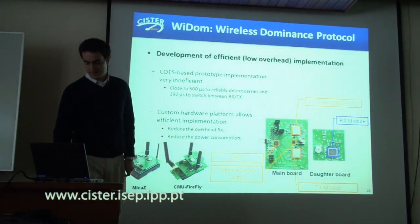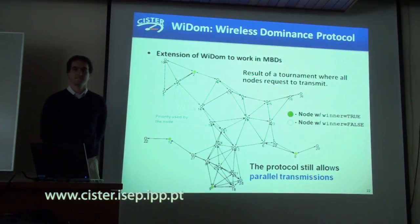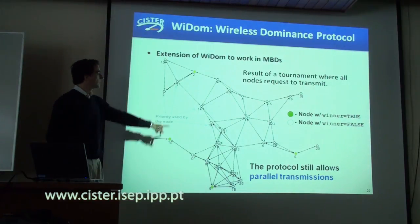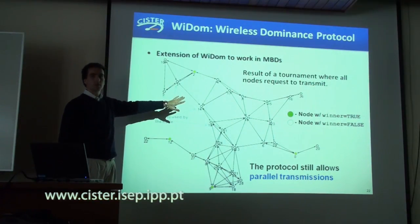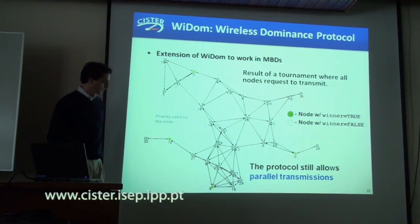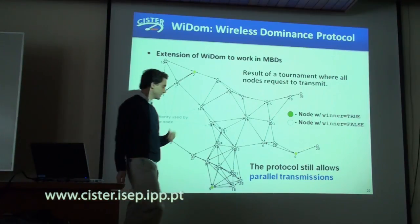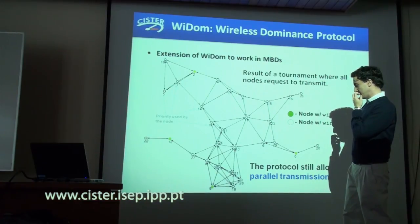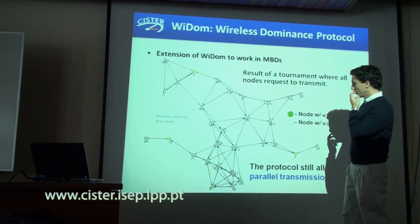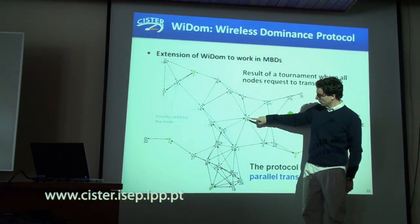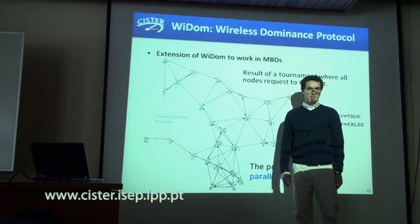I have one question about the previous slide. If node 8 wants to transmit when node 12 wants to transmit — this was an example where all nodes wanted to transmit — why is node 8 not allowed to transmit when node 12 wants to? That's a good question. The complicated part is that node 8 has a node in its two-hop neighborhood that has a lower priority than it.